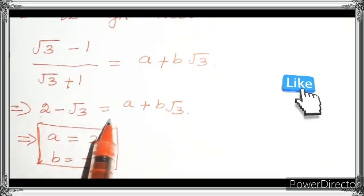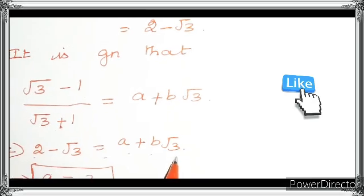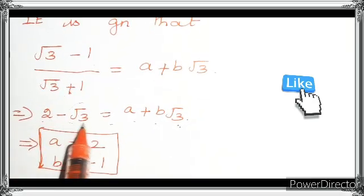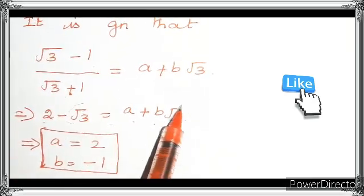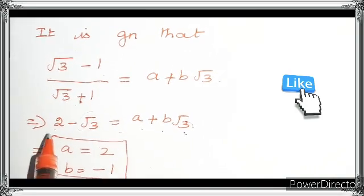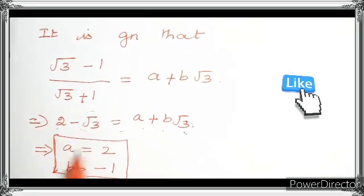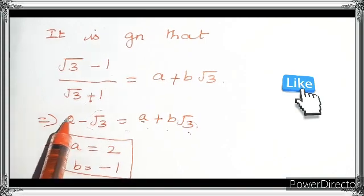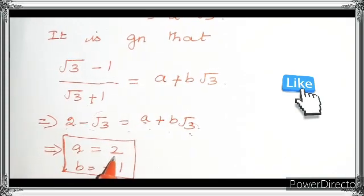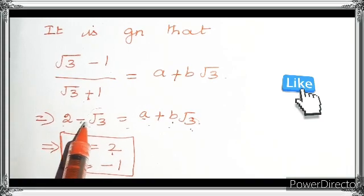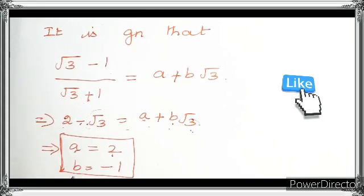So 2 minus root 3 equals A plus B root 3. Equating on both sides — here it is in the form root 3, and here also it is in the form root 3, therefore we can equate. So A equals 2, and in the place of B we are having minus 1, so B equals minus 1.